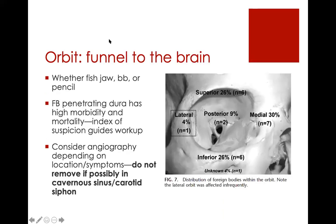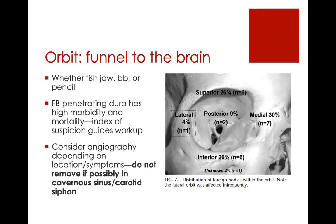The orbit funnels towards the brain, whether it's a fish jaw, BB, or pencil. The bone directs things towards the apex where the foramina are. You always have to consider if something is far back enough to penetrate the dura or even large vessels. So get imaging before you touch any foreign body sticking out of the orbit, and if there's any chance it might be close to dangerous structures, definitely get neurosurgery involved before doing anything with that foreign body.